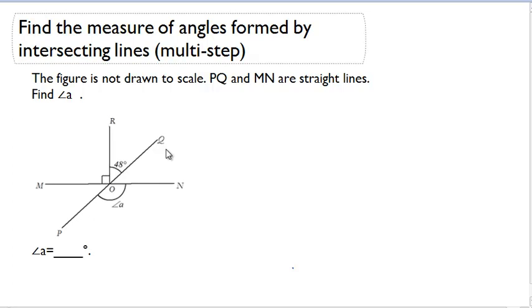For example, we have our two straight lines, MN and QP. And then we also have another ray, OR, coming off of that vertex O, which is going to complicate our vertical angles just a little bit.